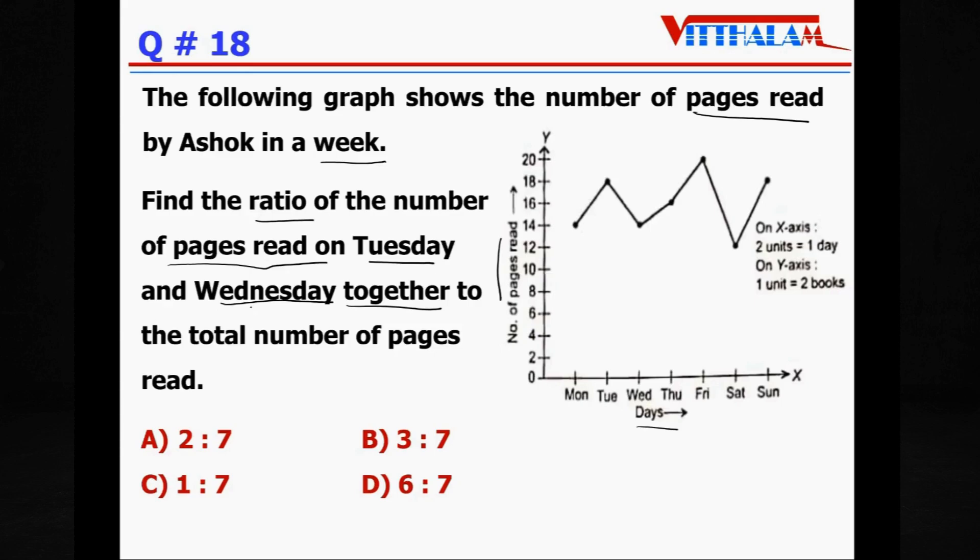So Wednesday it is 14 and Tuesday, Tuesday it is 18. So total pages read on Tuesday and Wednesday is 18 plus 14, that is 32. 32 pages read on Tuesday and Wednesday. And we have to take a ratio by total number of pages read. So on Monday it is 14.